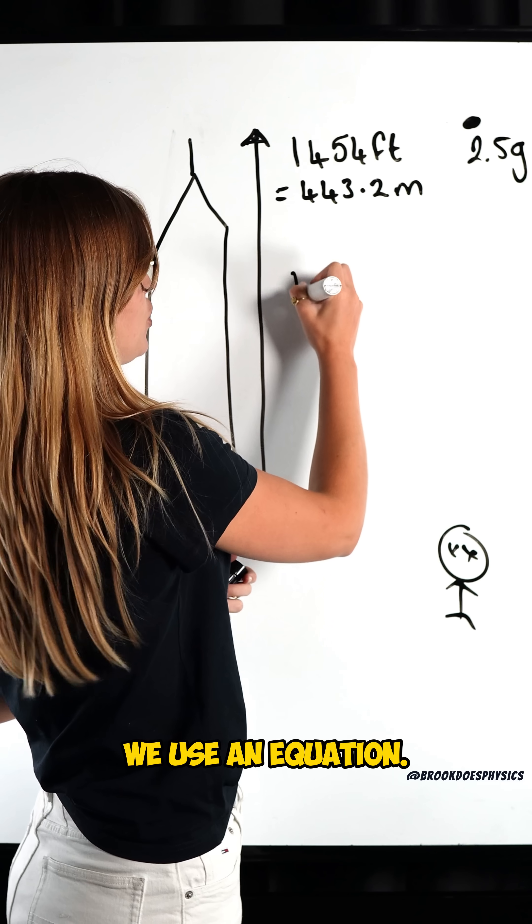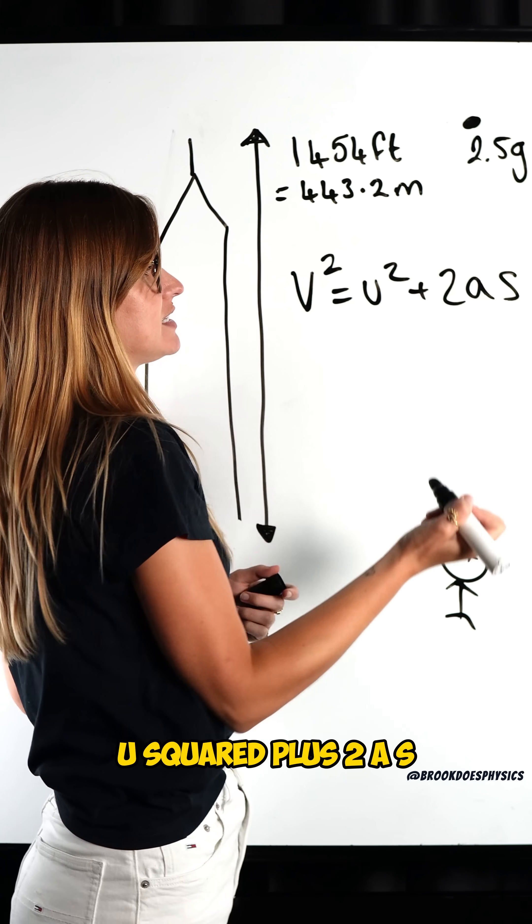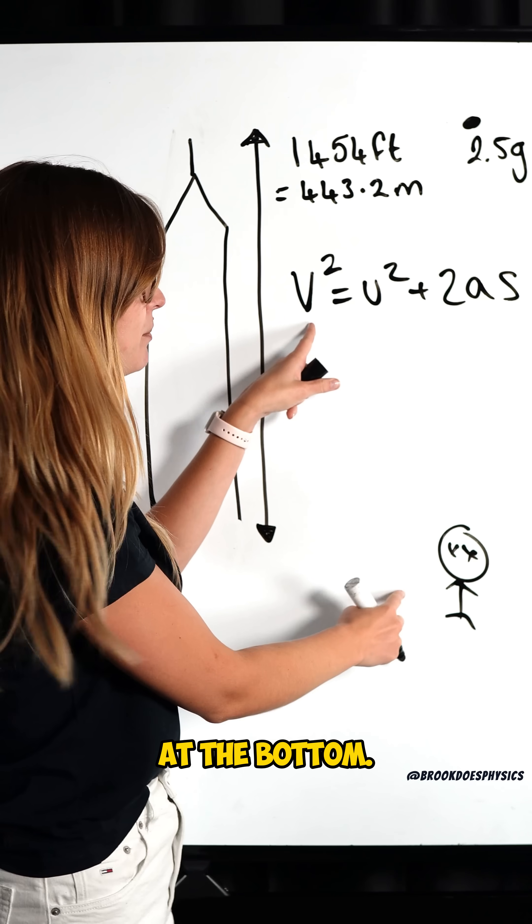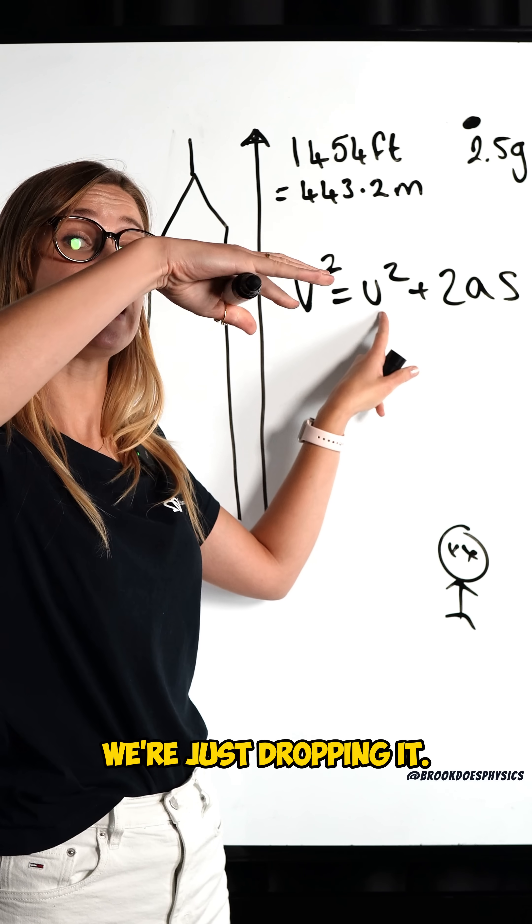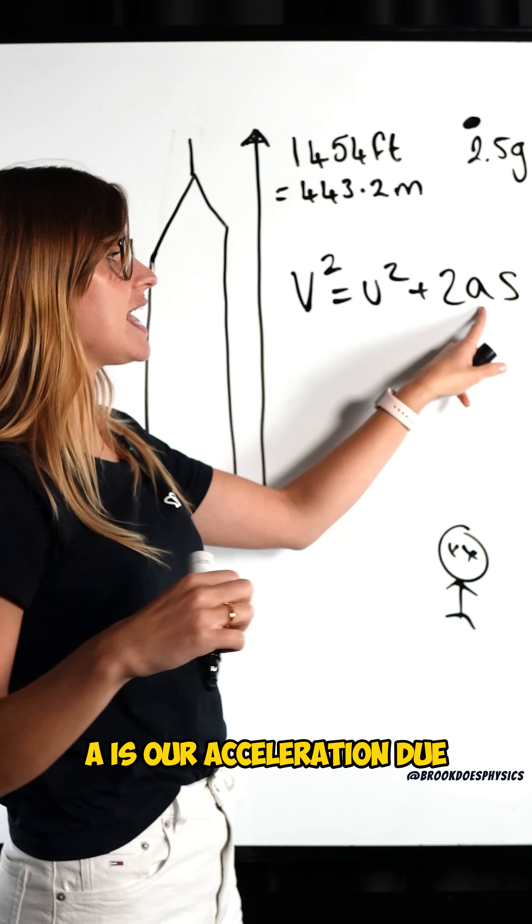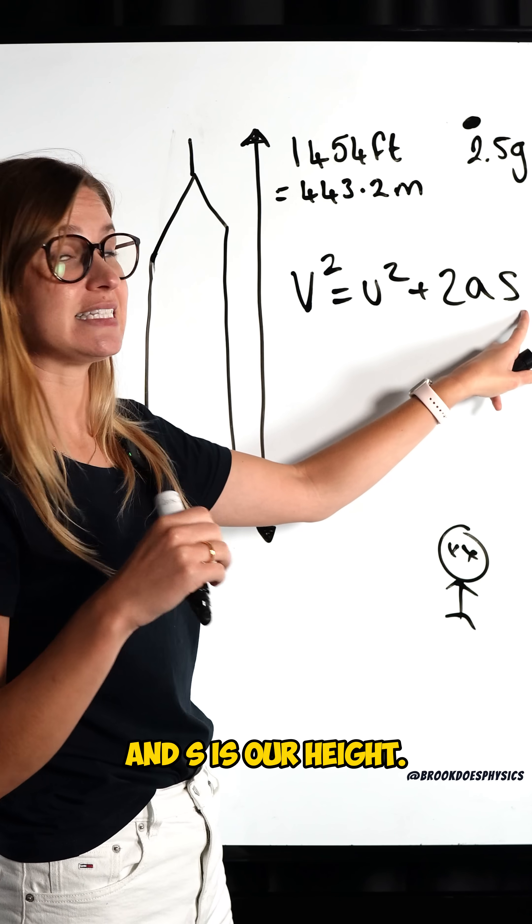To calculate speed, we use an equation v² = u² + 2as. V is the speed right at the bottom. U is our starting speed, which will be zero because we're just dropping it. It's not moving at the start. A is our acceleration due to gravity on Earth, 9.81, and s is our height.